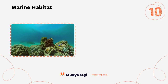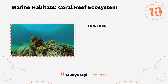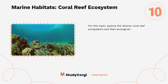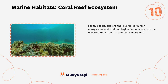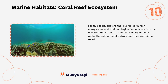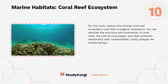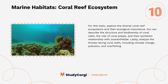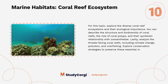Marine habitats — coral reef ecosystem: For this topic, explore the diverse coral reef ecosystems and their ecological importance. Describe the structure and biodiversity of coral reefs, the role of coral polyps, and their symbiotic relationship with zooxanthellae. Analyze the threats facing coral reefs, including climate change, pollution, and overfishing. Explore conservation strategies to preserve these essential marine habitats.